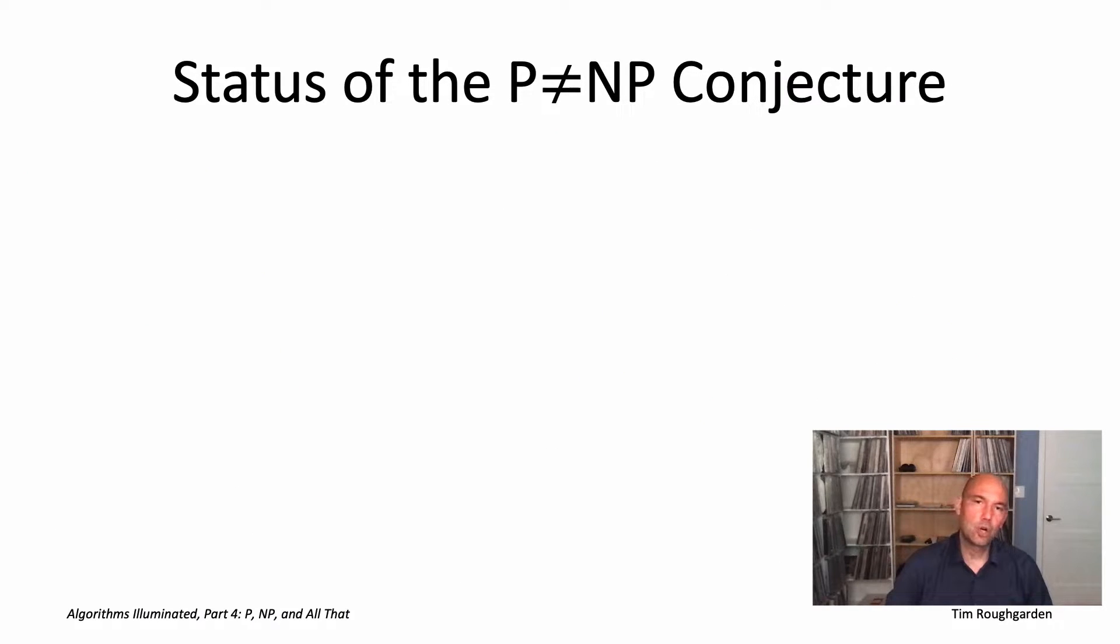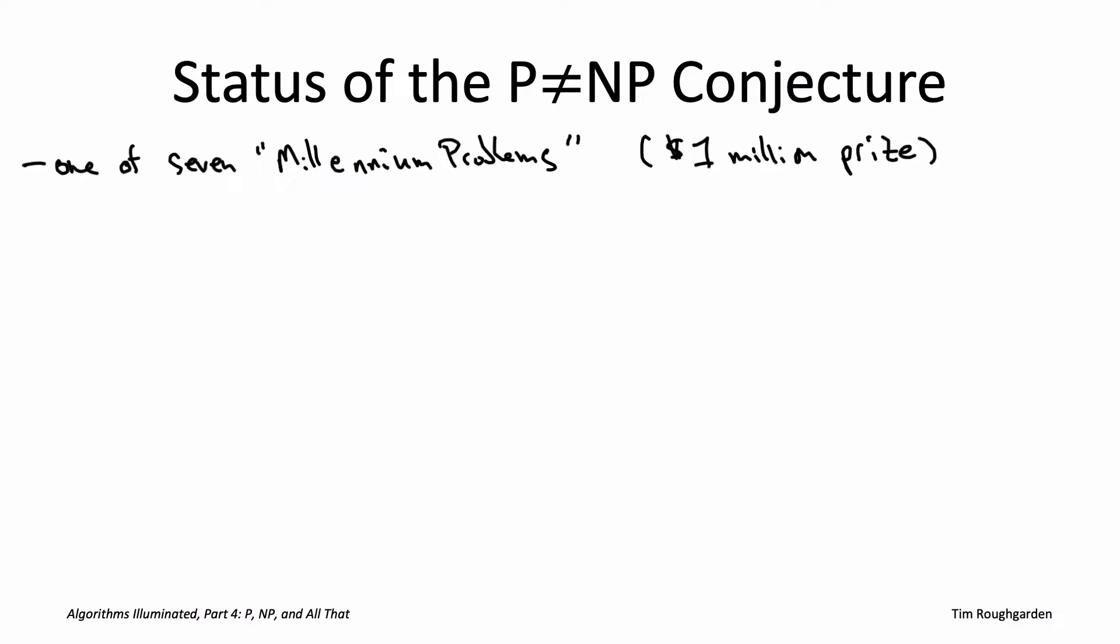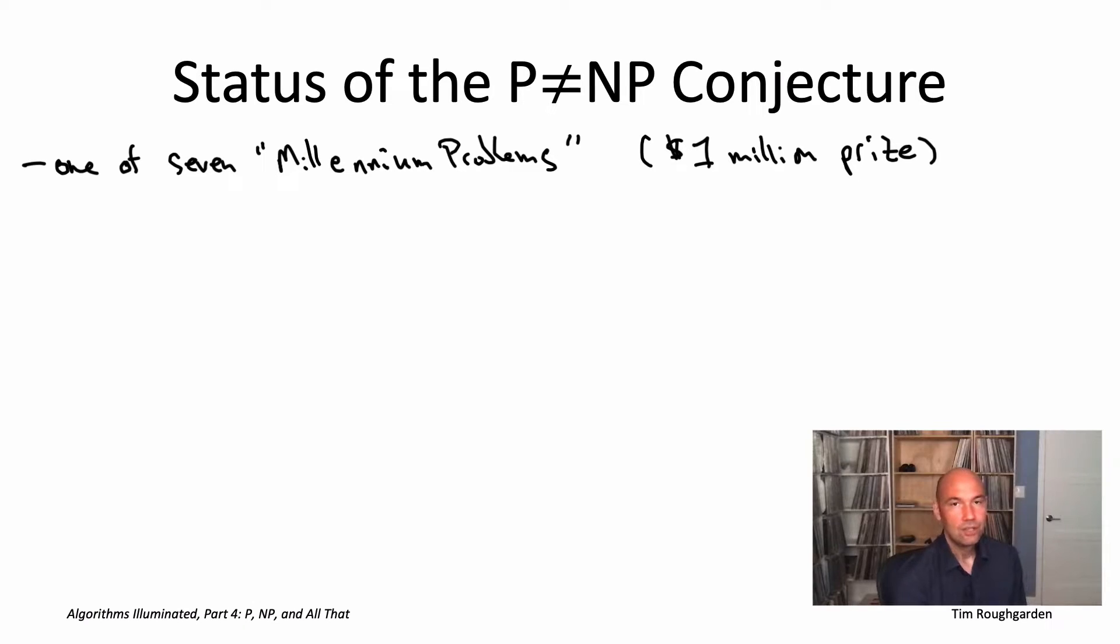Let's conclude by talking about the current status of this conjecture. This conjecture is rightfully viewed as possibly the deepest open question in all of computer science and one of the most important questions in mathematics. Back in the year 2000, the Clay Institute identified seven millennium problems and offered a reward of $1 million to anybody who could solve one of these problems. P not equal to NP was one of the seven. The other six were the Riemann hypothesis, Navier-Stokes equation, Poincare conjecture, Hodge conjecture, Birch and Swinnerton-Dyer conjecture, and Yang-Mills existence and mass gap problem.